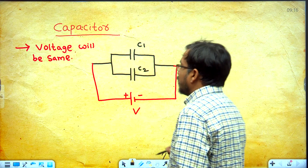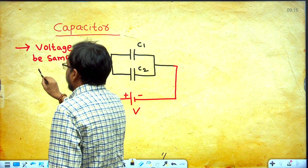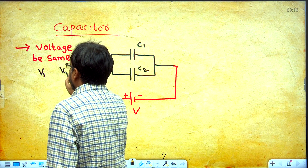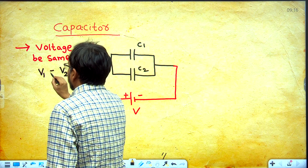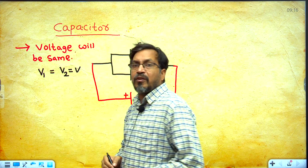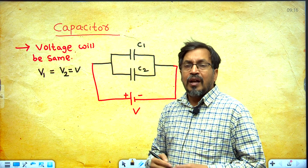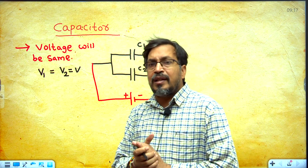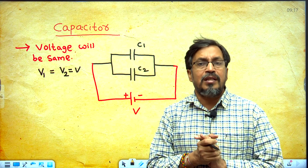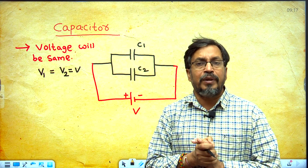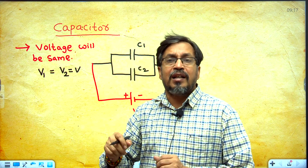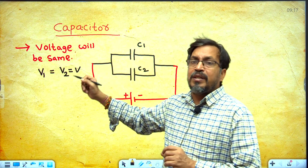voltage will be the same. I am writing here: V1 is the voltage across capacitor C1, V2 is the voltage across capacitor C2. So V1 equal to V2 equal to V. When the two capacitors are connected in parallel, voltage will be same.